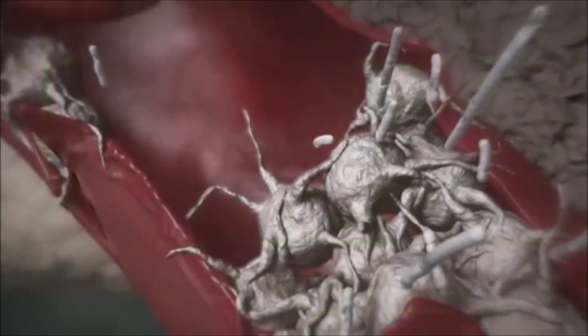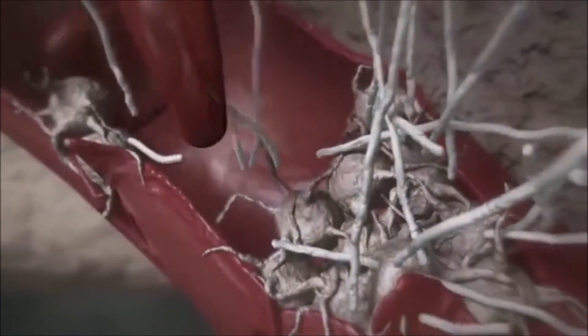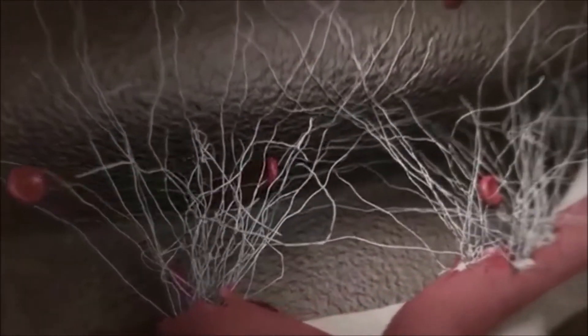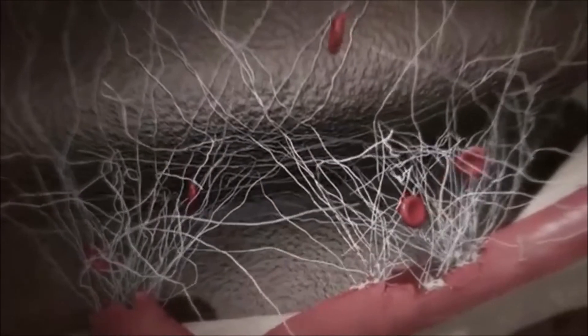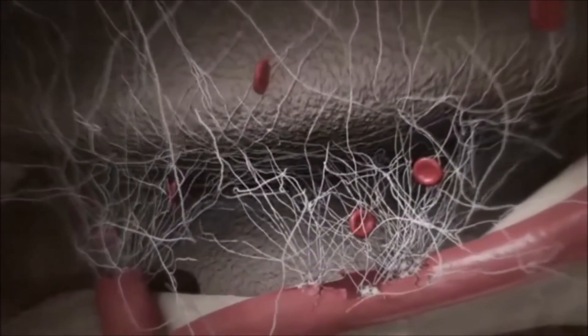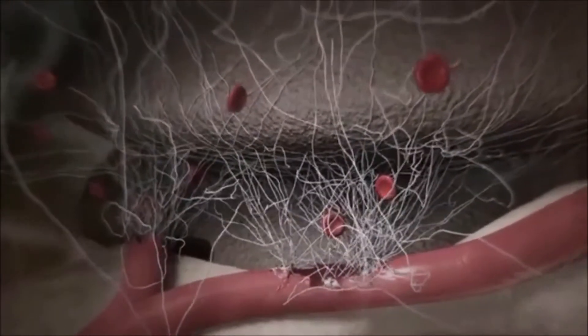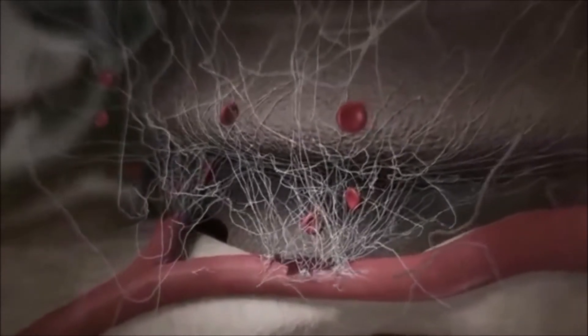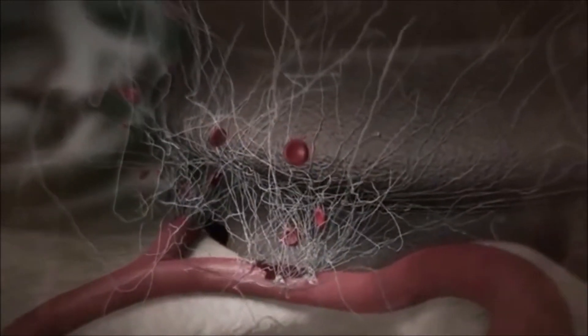Fibrin monomers spontaneously cross-link forming a fibrin network. The blood clot permeates the wound space, forming a provisional matrix. It also adheres to the implant surface. This blood clot has tremendous importance as a provisional matrix for subsequent bone healing processes.